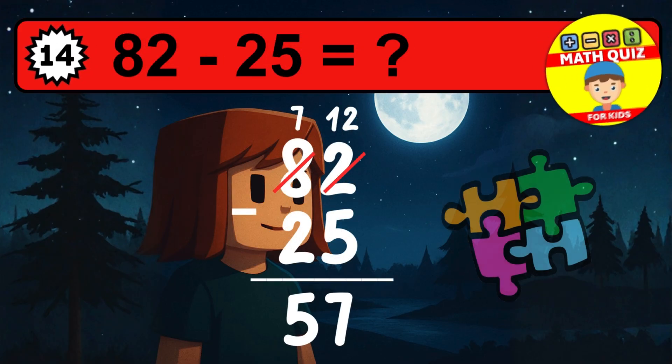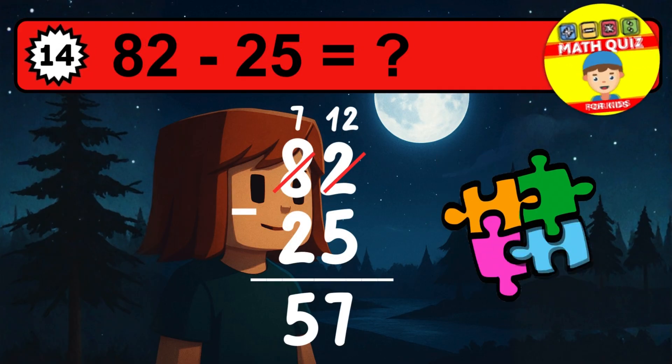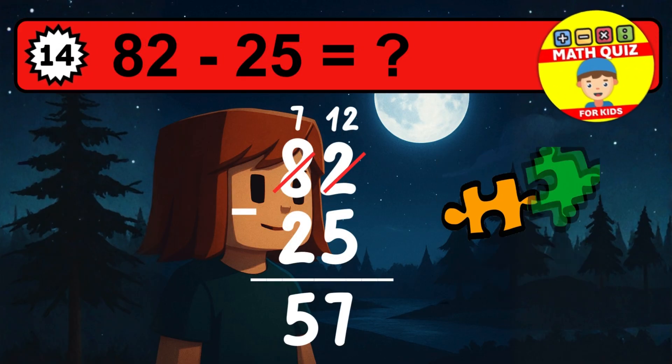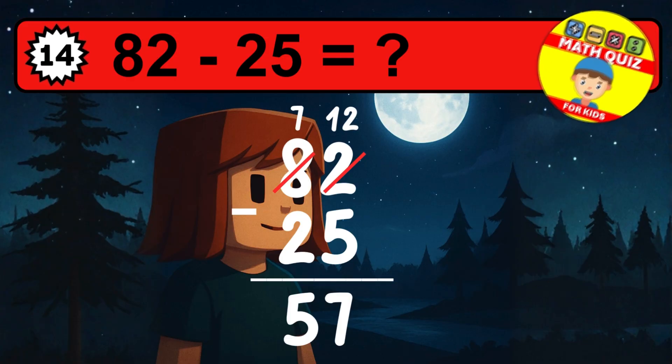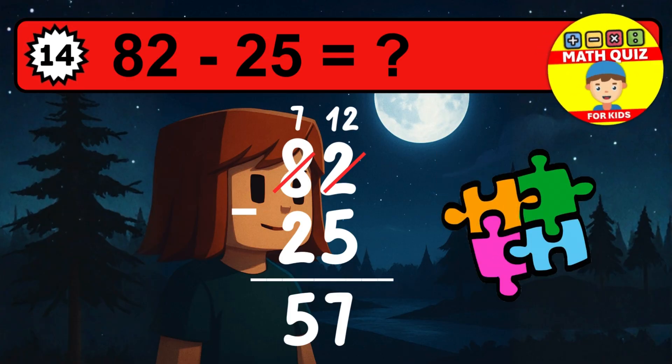Then we go to the tens. Seven minus two is five. The final answer is fifty-seven.